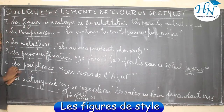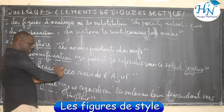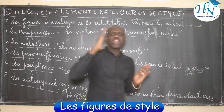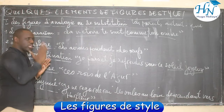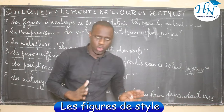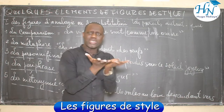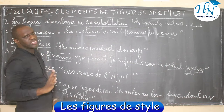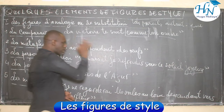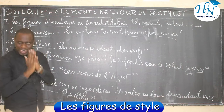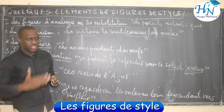Nous avons la périphrase. La périphrase consiste à mettre en valeur plusieurs éléments pour n'en traduire qu'un seul. Dans Les Fleurs du Mal, Charles Baudelaire dit « ces rois de l'azur » — il fait allusion aux oiseaux qui s'appellent les albatros. Autre exemple : le chef de file du mouvement romantique, qui est Victor Hugo. Le grand poète noir, président de la ville du Sénégal, qui est Léopold Sédar Senghor.